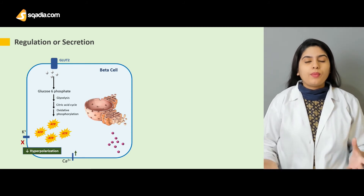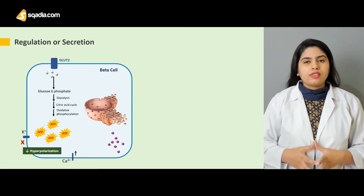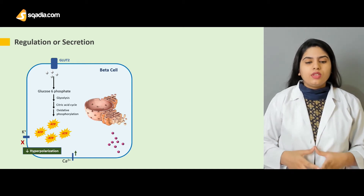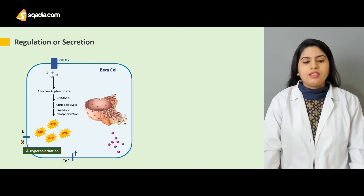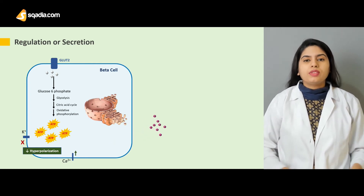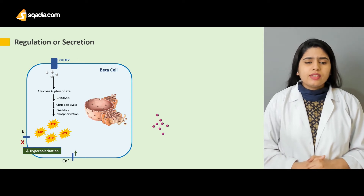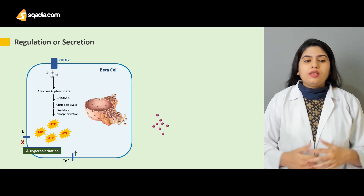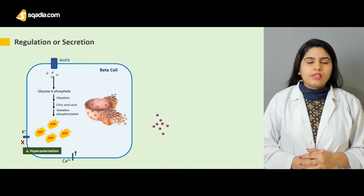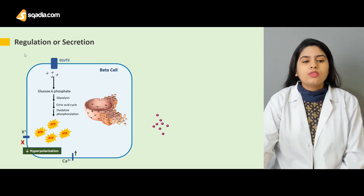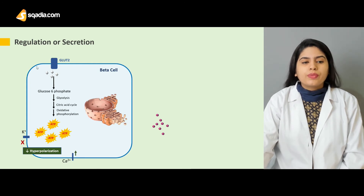When calcium moves inside the cell, it causes the release of insulin from the Golgi apparatus. The granules move out from the cells and enter the blood. That is how insulin is regulated and enters the blood. The vice versa takes place when the glucose level is low — a low amount of glucose will be converted into glucose 6-phosphate.